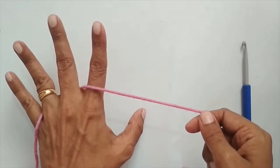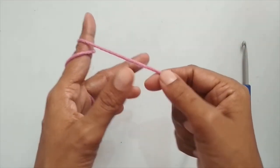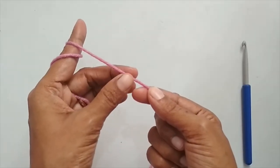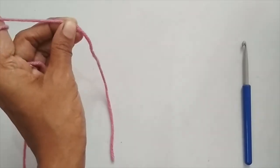Then I'll place it around my pointing finger and loop it once, then bring this end and hold it with the thumb and the middle finger. So this is how I like to hold my yarn. I'll show you once more.